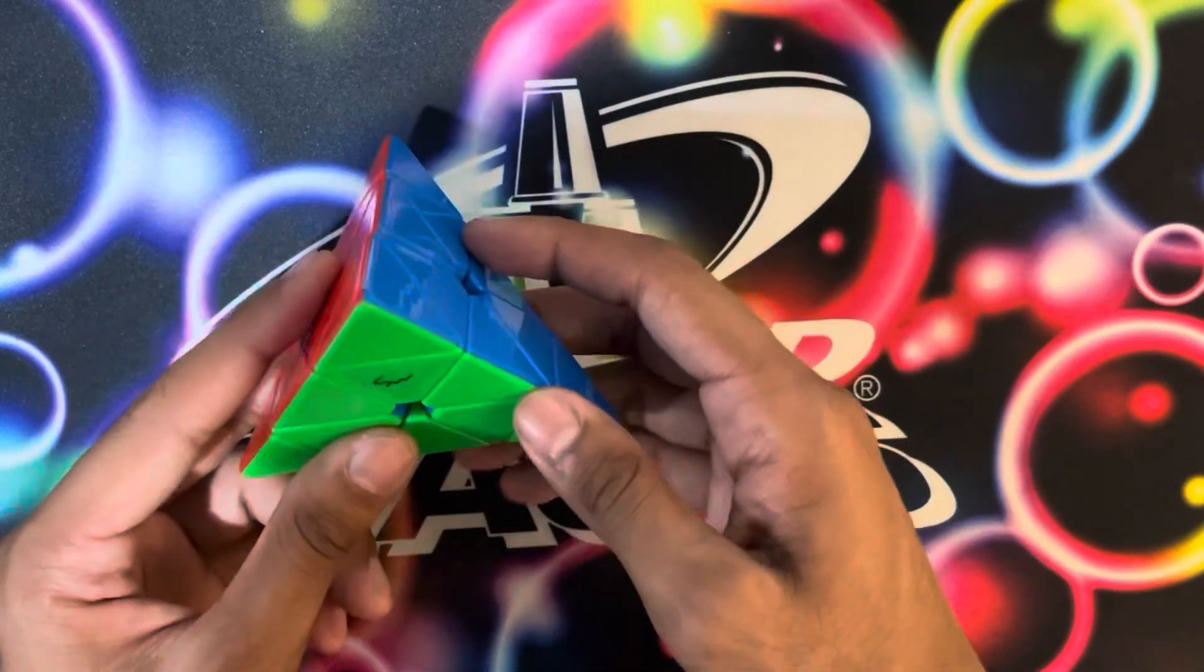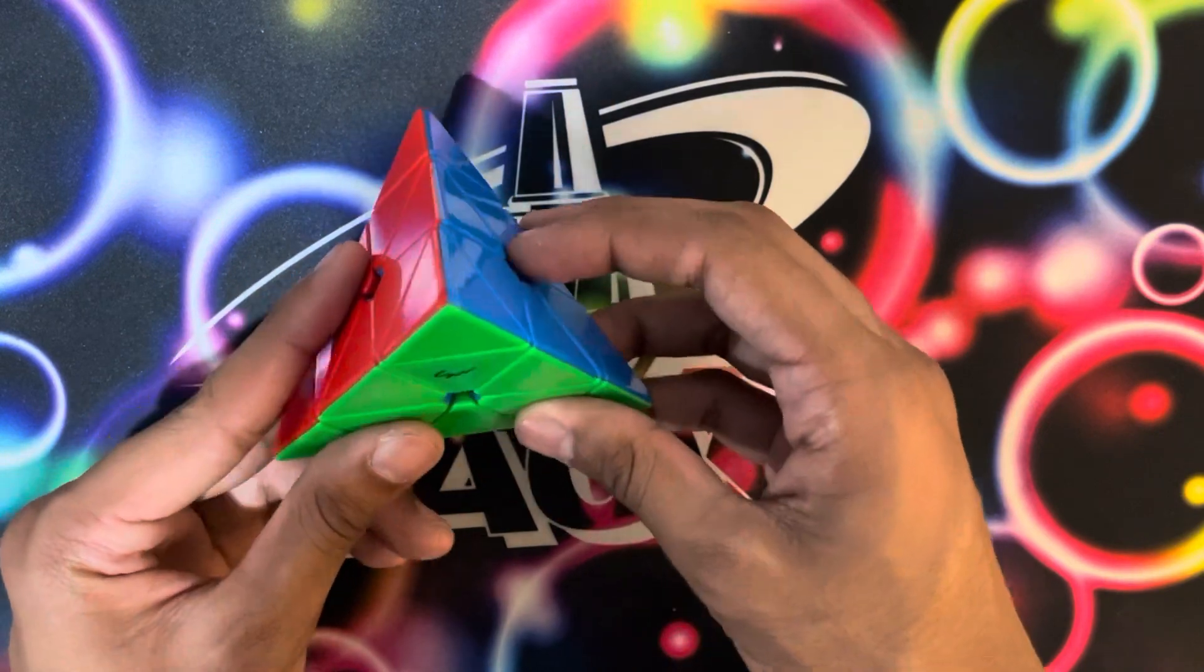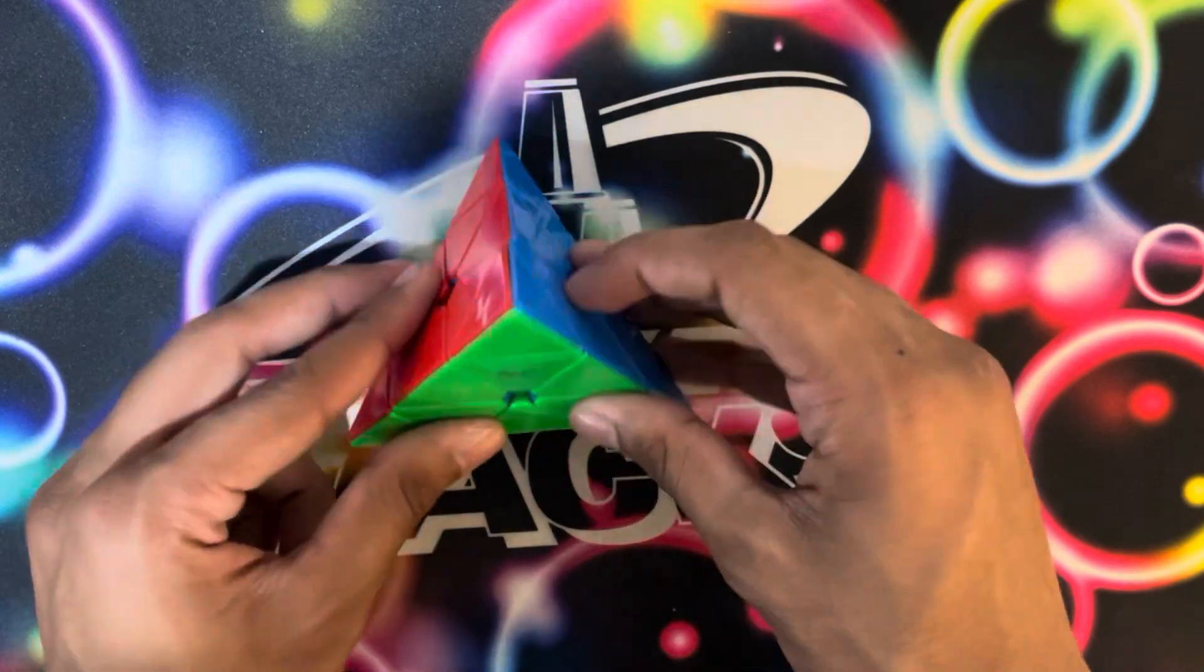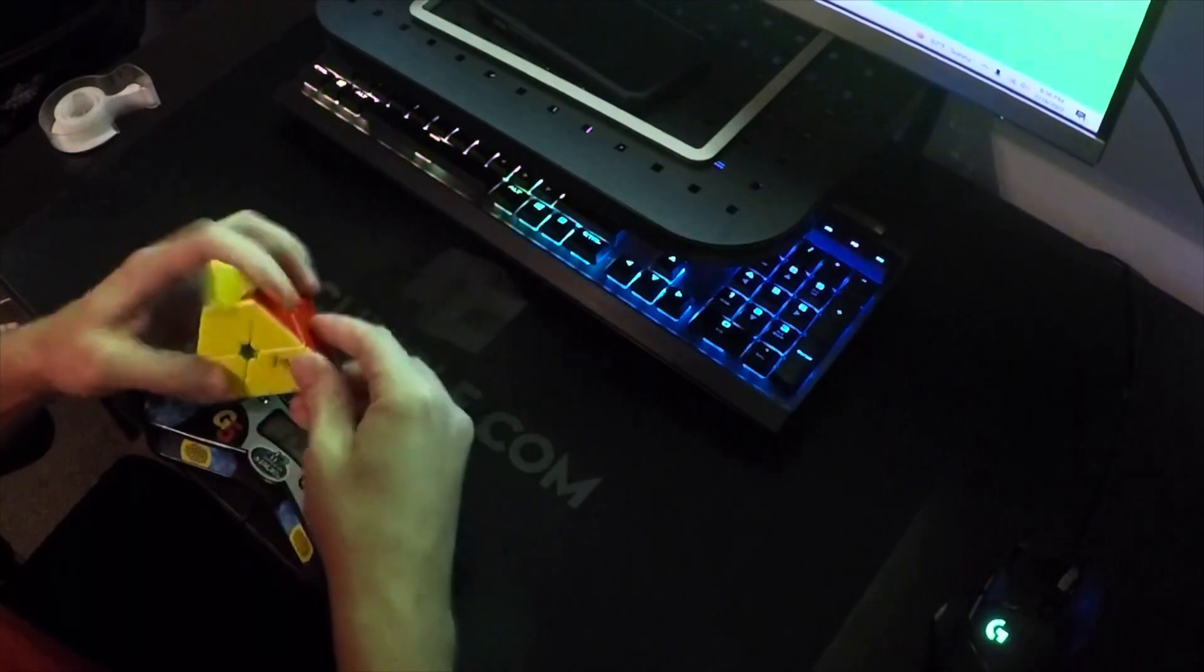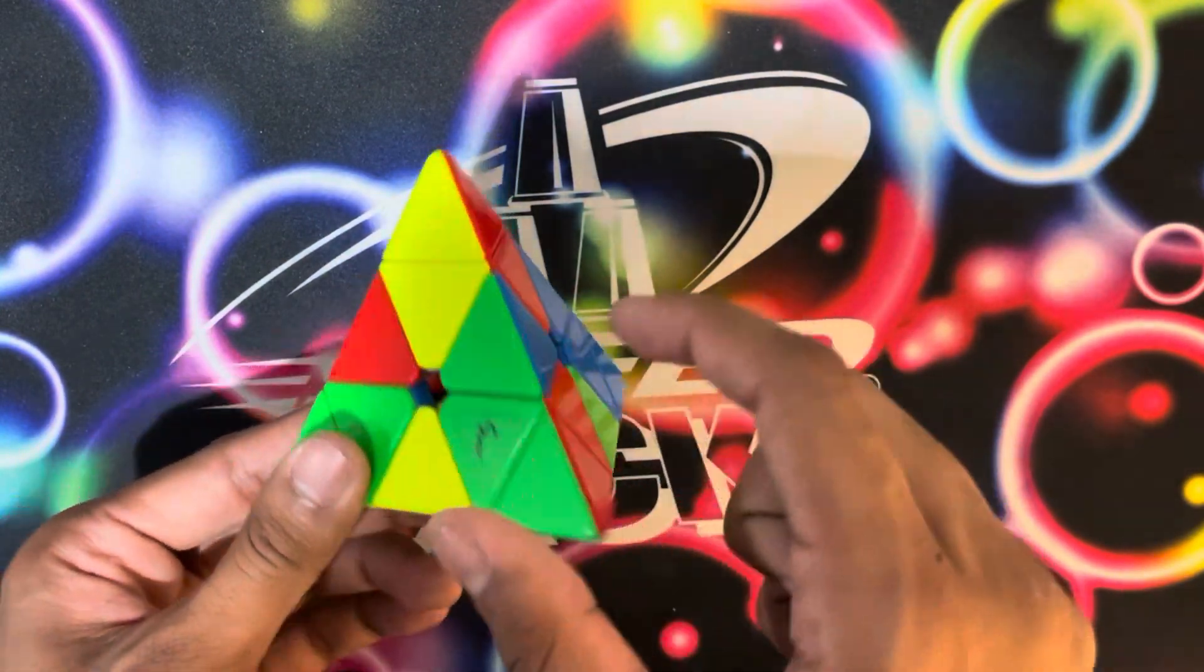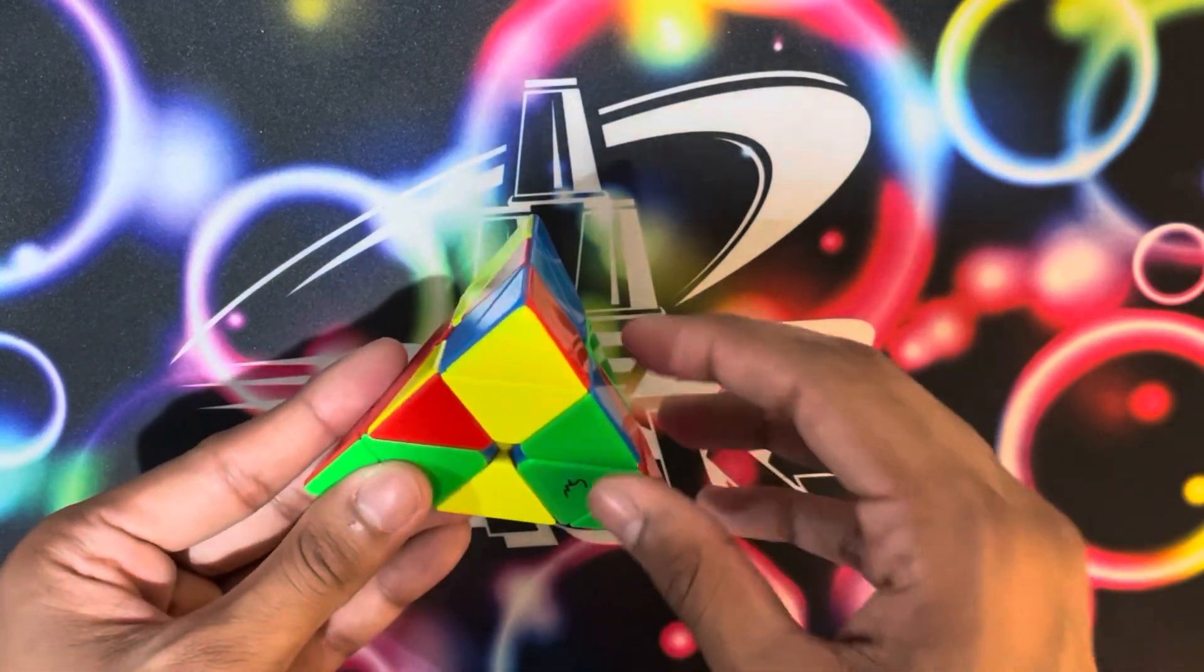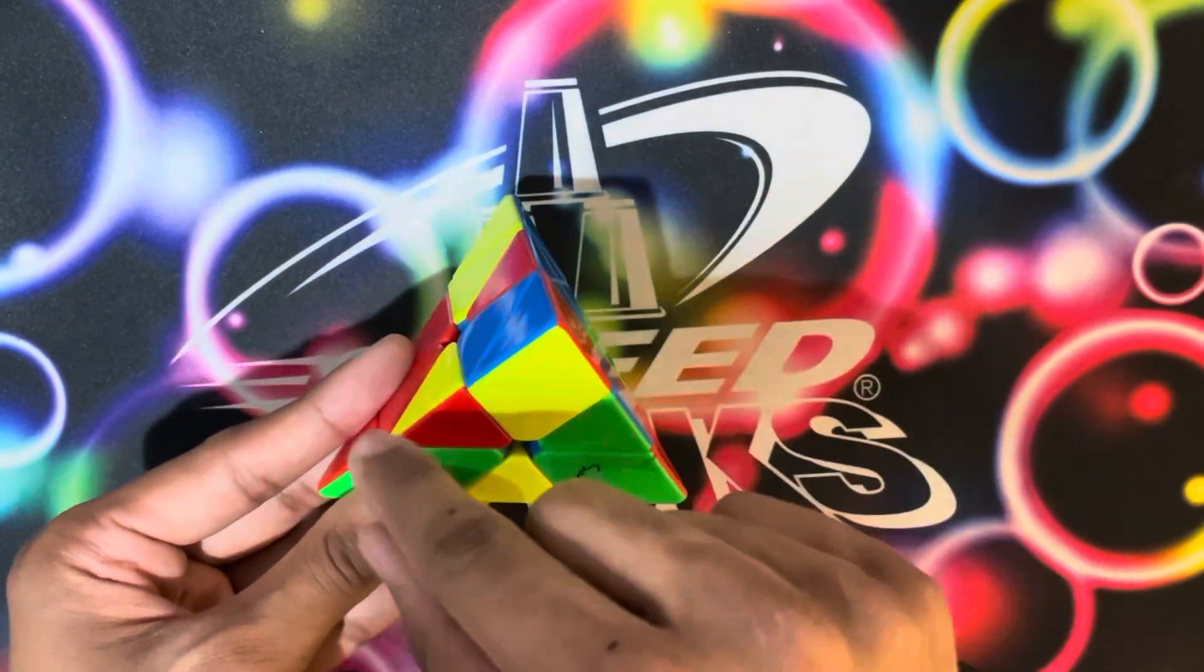That's not something I expect you to see too much, but you should start looking a little bit more into forcing L3E when it's easy to. On this scramble, Chris does the green V. He sees that he can solve the green-blue edge and the green-red edge pretty easily.